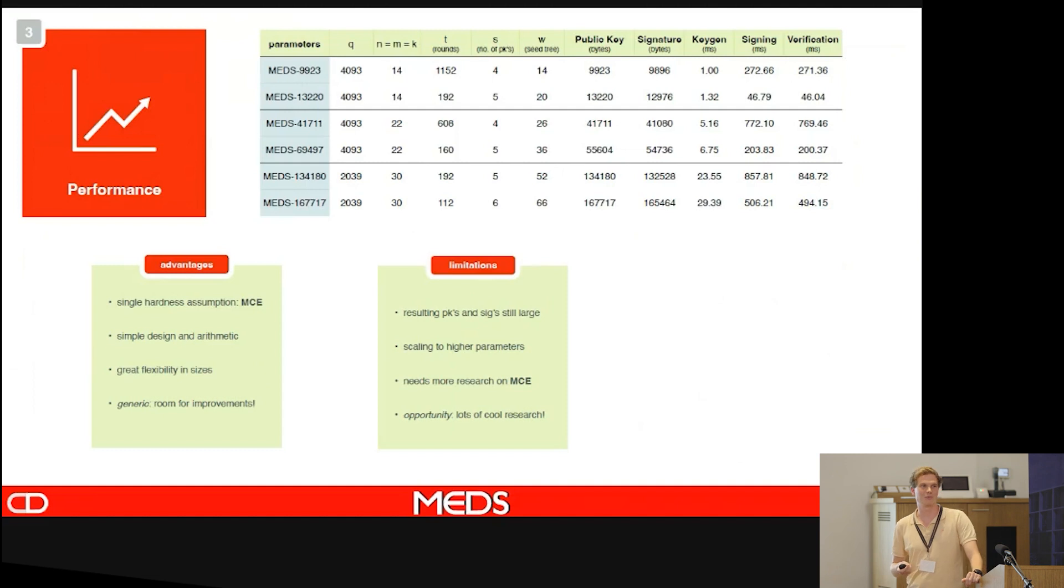There's also some limitations. The public keys and the signature sizes are still quite large, unfortunately. Scaling to higher parameters will get a big hit because we're working also with three-dimensional objects. So that will be a big problem.